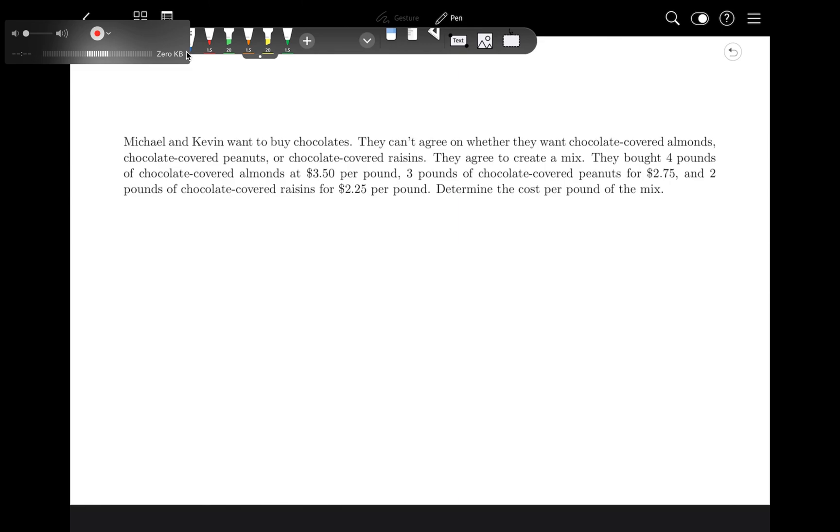So in this case, it's fairly straightforward which thing is the weights and which things are the values because we have something that is literally a weight, right, things in pounds, and something that is literally a value, which is dollars. So the way we could set this up, we've got our weights are four, three, and two, and our values are 350, 275, and 225.